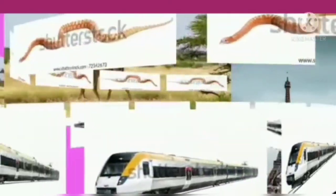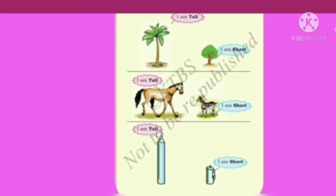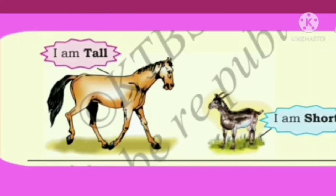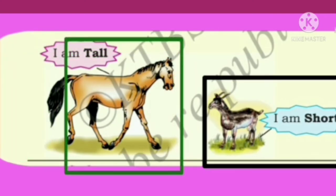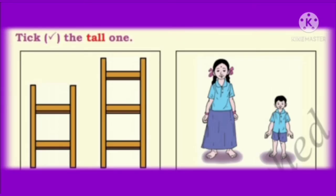Children, you have to list many objects using tall and long for better understanding in your homework book. Now, let us learn what is on page 172 of our textbook: a tall tree and a short tree, a tall horse and a short goat, a tall candle and a short candle. Next, we have ticked the tall ones. On comparing these two ladders, the second ladder is taller than the first ladder.